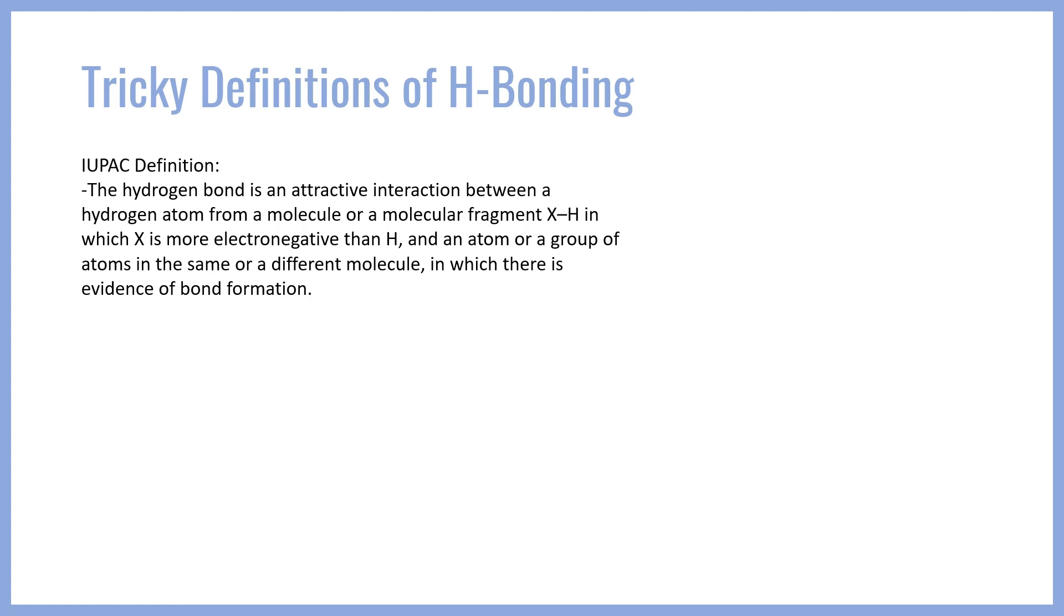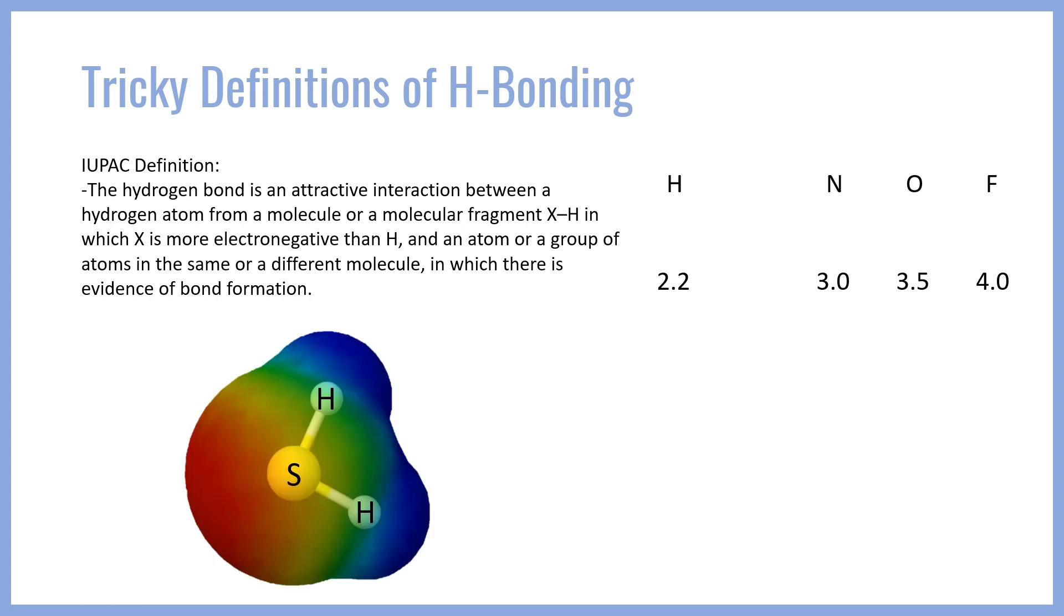Nowhere in this definition does it explicitly state hydrogen bonds can only form between H, N, O, or F. There's no necessity for those elements to be present, it's just typical because those are the most electronegative elements on the table. When we look at that difference, nitrogen has an electronegativity of 3.0, oxygen 3.5, fluorine 4.0. However, chlorine and sulfur also have very high electronegativities. Chlorine is about a 3, and sulfur a little bit lower, but they're relatively high as well.